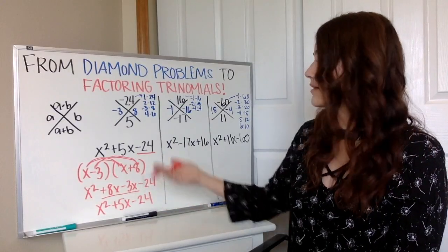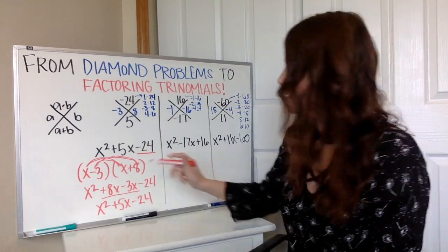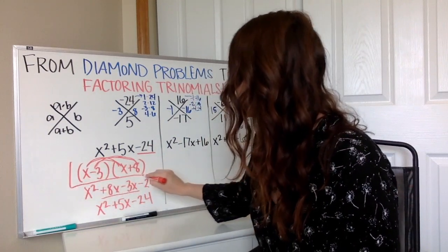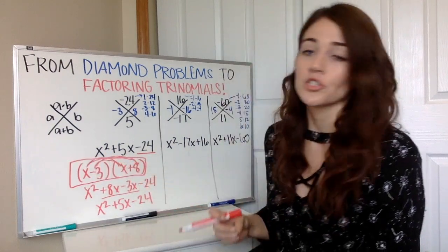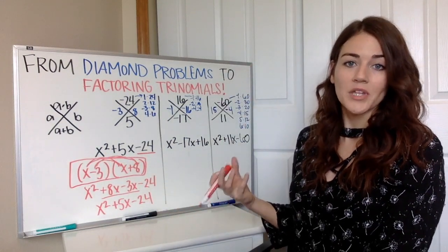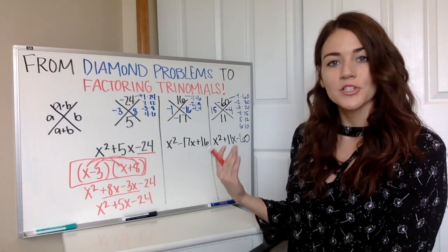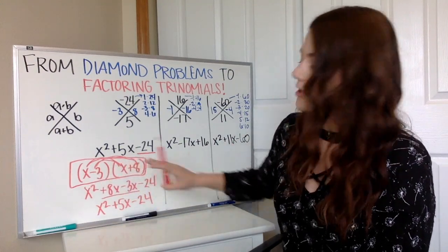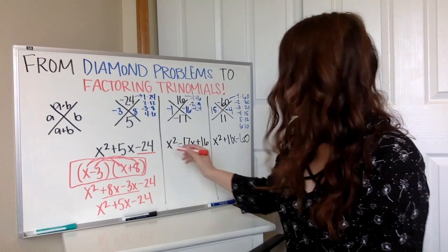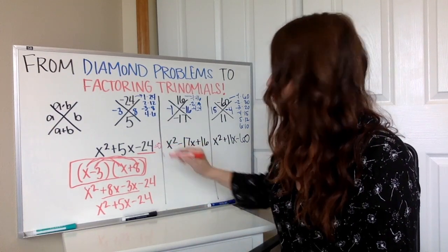This would be your factored answer, which the reason why we do that is to be able to solve trinomials. So then where you would go from there to solve it is you would set each of those equal to zero or equal to whatever your expression was equal to. All right, so if that was equal to zero then you would just say x minus 3 equals 0.